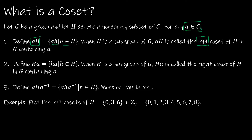Let's take a look at our example. Here G is Z9, and Z9 is a group under modular addition. So even though our definition says AH — take A times H — we're actually going to be taking A plus H.